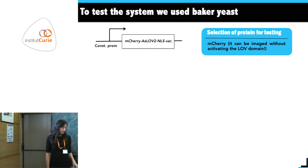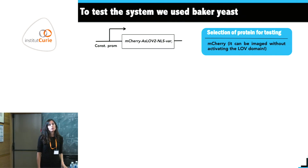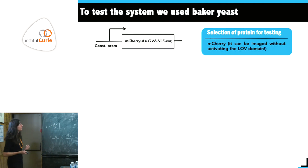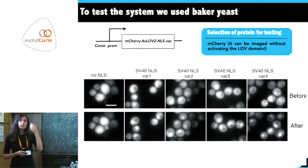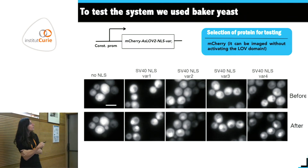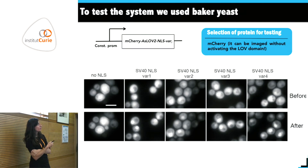To study localization we needed a fluorescent protein compatible with the LOV domain — meaning one we can image without activating it, which leaves few options. We selected mCherry. The control without any NLS should be equally distributed between compartments; we never quite figured out why some cells appear slightly more nuclear, but it doesn't affect the conclusions.